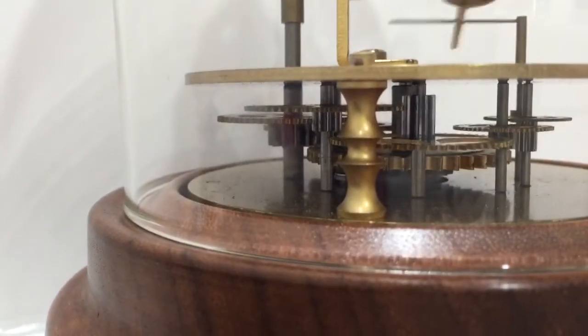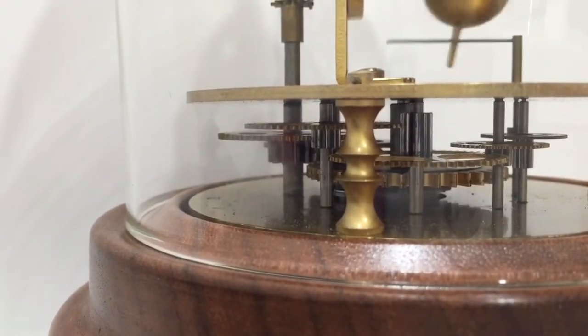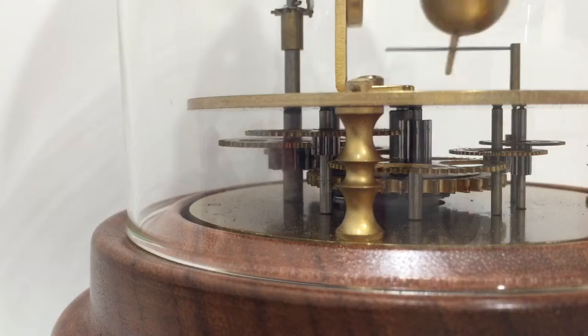LIGO is basically a recording device. It's trying to record the shape of space-time ringing, the ringing drum, and it plays it back as sound.